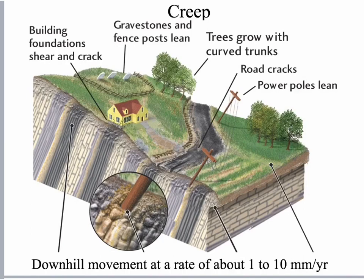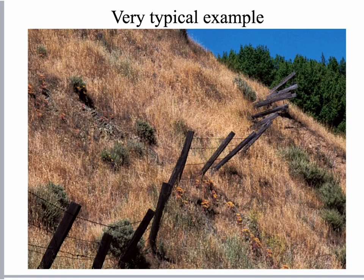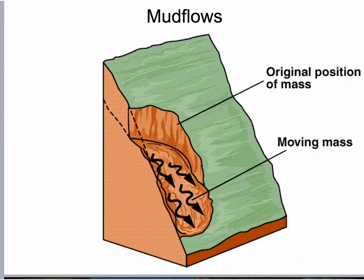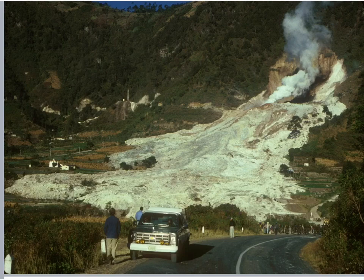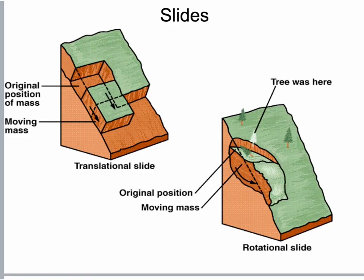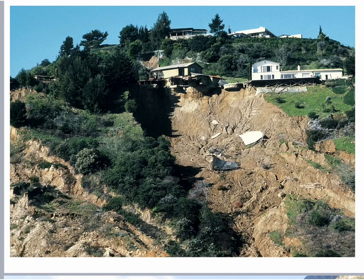Creep is very slow, but the top layer moves faster than the bottom, causing things to slowly bend over time. A basic example: a fence built on the side of a hill that leans more and more — it wasn't built that way, but gravity has pulled it down. Mud flow: it's heavy with water, washing everything away. Here's a picture of a mud flow washed down the side of a hill. And here's a landslide — a huge section of land slid right down this hill, and unfortunately people had built houses up there.